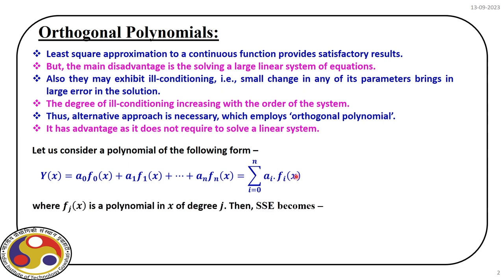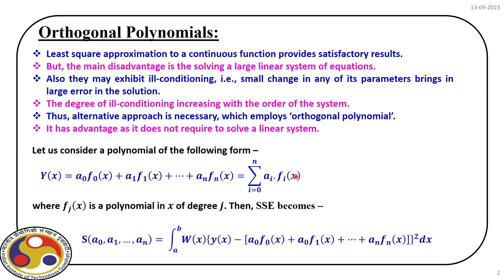This φᵢ(x) — we can define any polynomial of our choice. Once we do that, we can define SSE. For a continuous function, the expression is: we have y(x), the observation, minus the model we fit — that is the amount of error. We square it, multiply by the weight function, and integrate over the complete domain, giving us the SSE.